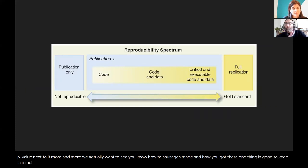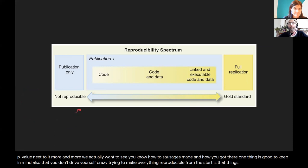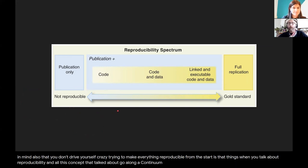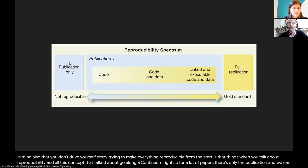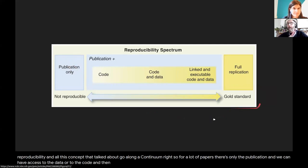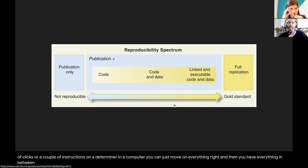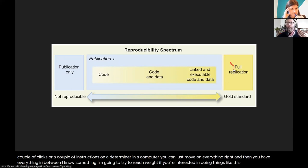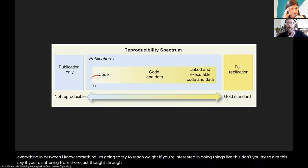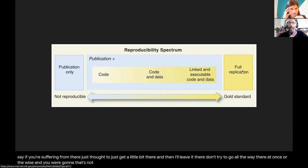One thing that's good to keep in mind, so you don't drive yourself crazy trying to make everything reproducible from the start, is that reproducibility goes along a continuum. For a lot of papers, there's only the publication and no access to data or code. On the other hand, you have papers where with just a couple of clicks you can rerun everything. If you're interested in doing things like this, don't try to go all the way at once — just start to get a little bit there, then a little bit more. Don't try to go all the way at once, otherwise that's not a healthy way to approach this.